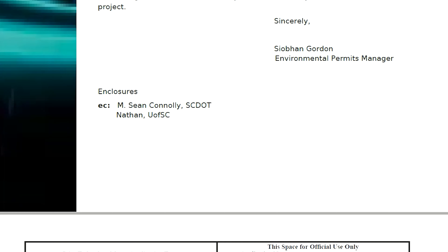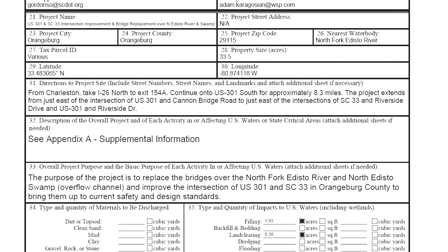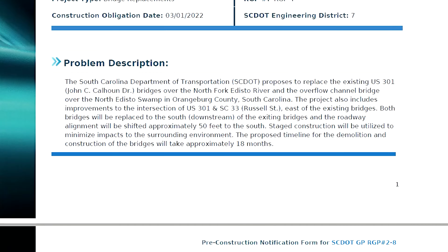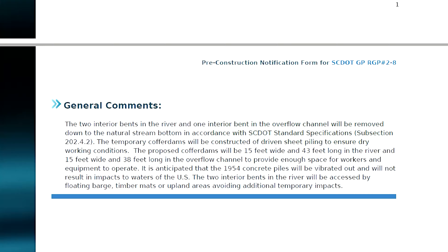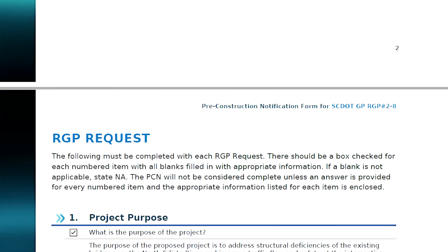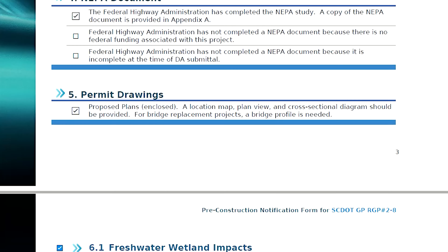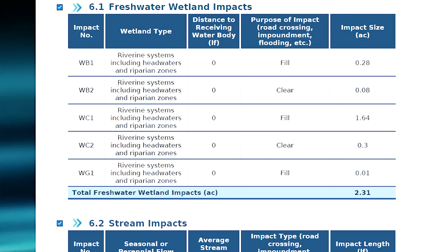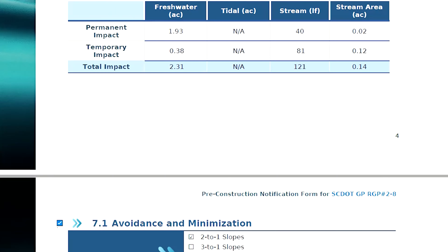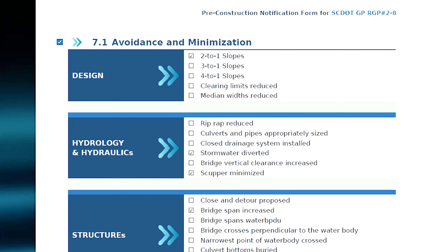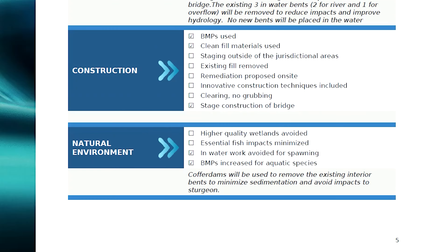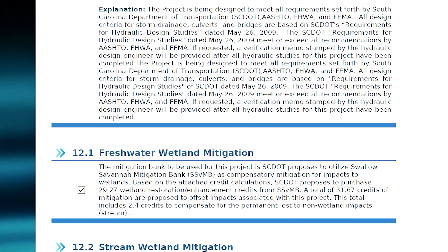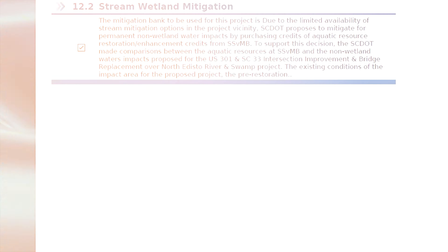Previously, it would take between 15 to 20 hours to gather, document, and format all necessary information for a general permit. Using e-permit, a GP now takes an hour or less and provides consistently formatted submittals for expedited USACE review and approval.